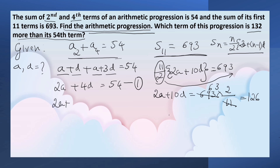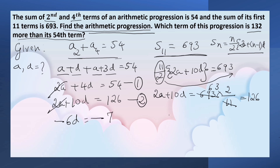Equation number 2: 2A plus 10D equals 126. Now let us solve these two equations. Subtracting equation 2 from equation 1: 2A cancels. We get minus 6D equals minus 72, since minus 126 plus 54 equals minus 72. So D equals minus 72 divided by minus 6, that is 12. So the common difference is 12.